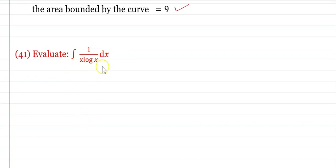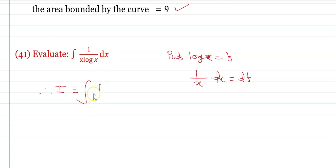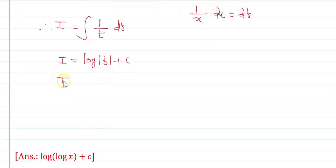Evaluate ∫1/(x·log x) dx by substitution. Let log x = t, then (1/x)dx = dt. The integral becomes ∫(1/t)dt = log|t| + C. Substituting back: the answer is log|log x| + C.